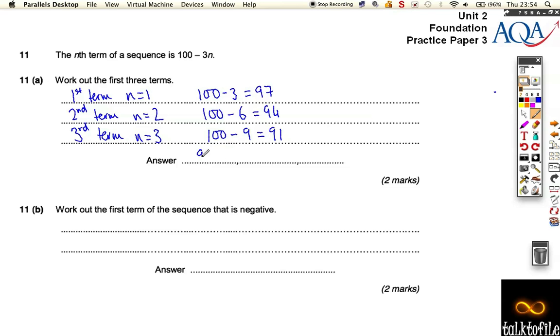So our three terms are 97, 94, and 91. Two marks. Now, work out the first term of this sequence that is negative.